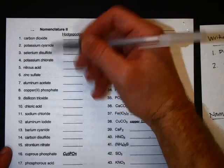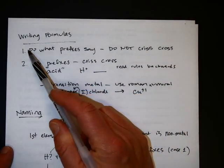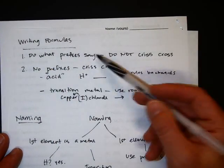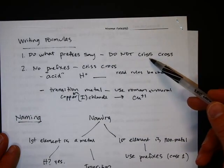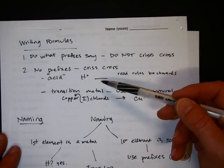So if we look in the left-hand side for writing formulas, you want to just kind of follow the rules. So if there's prefixes, you should do what they say, don't crisscross, and if there's no prefixes, you should crisscross.